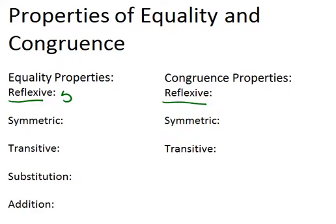For example, 5 is equal to 5, or 20 is equal to 20. As far as congruence, you could say that line segment AB is congruent to line segment AB. You will use the reflexive property of congruence most often when you prove that two triangles are congruent.